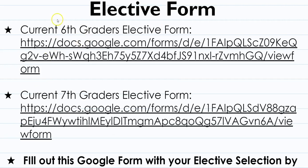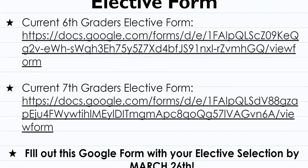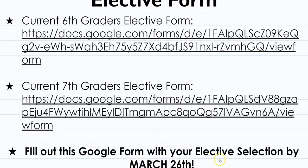If you are a current sixth grader, click the elective form for seventh grade and make your two choices. If you are a current seventh grader, fill out the form for eighth grade and make your two elective choices. You need to fill out your elective form by March 26th, which is Friday — today is Wednesday, so that gives you two days. Get on it and make your choices.